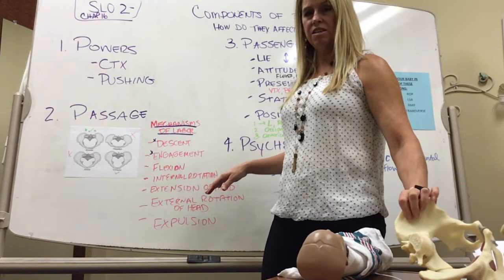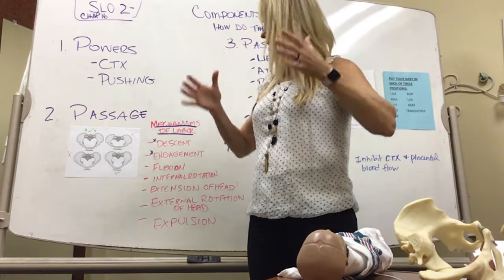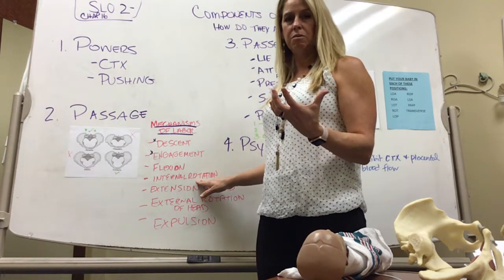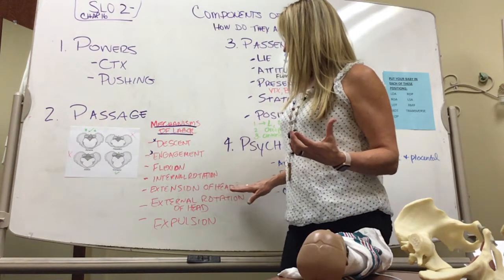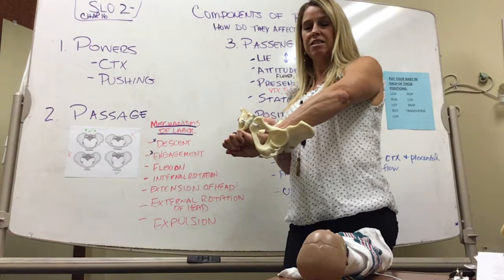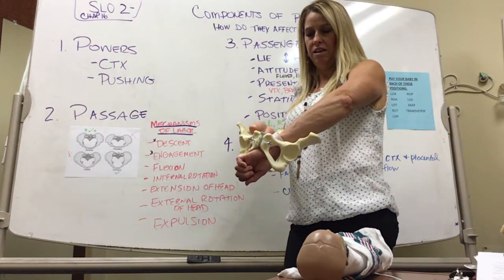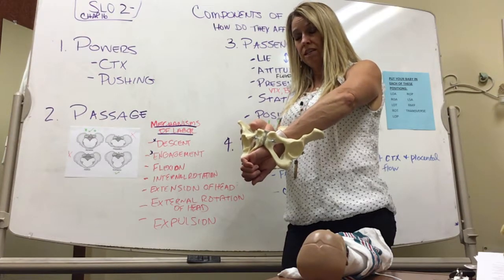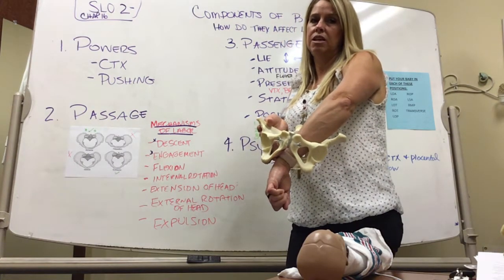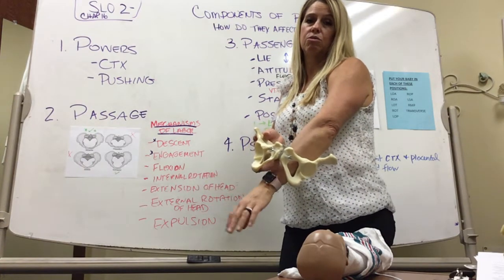If the baby can't flex its head properly — tuck its chin to make the smallest part go through the pelvis — that can disrupt the mechanisms of labor. It has to internally rotate into a position that makes it easy to pass through. As it passes through, the head can extend to get out, followed by external rotation of the head, which aligns the shoulders to come out more easily. Then the baby is expelled from the vagina and delivers vaginally.